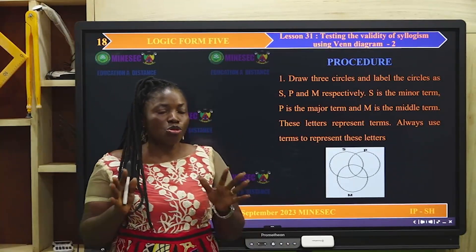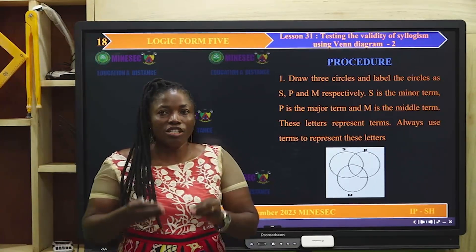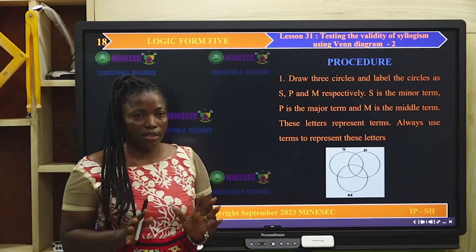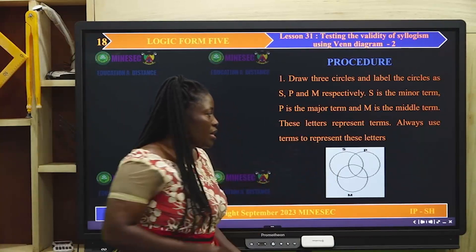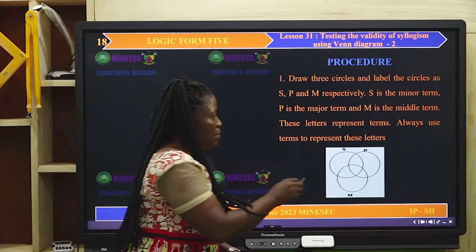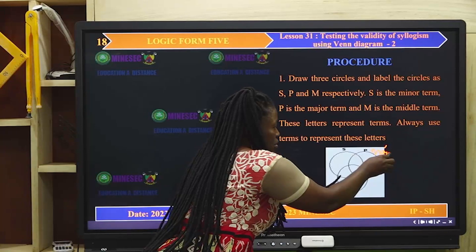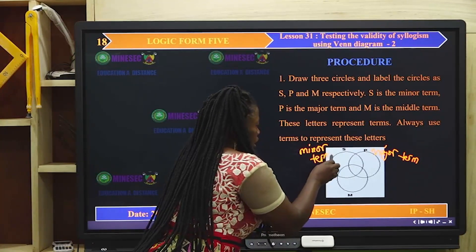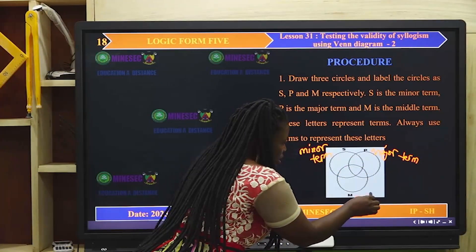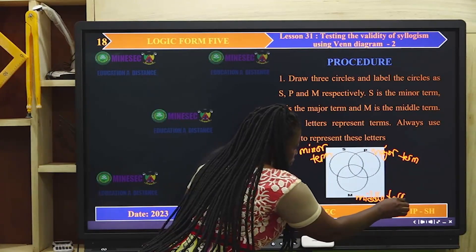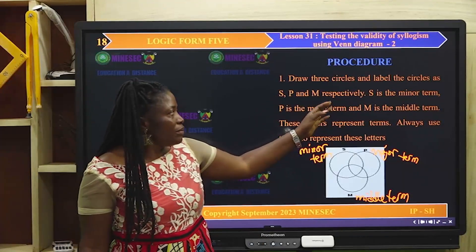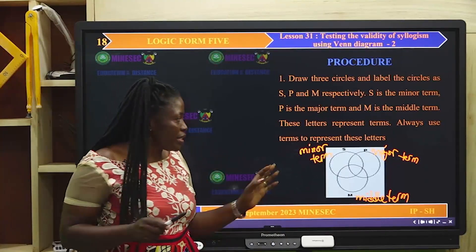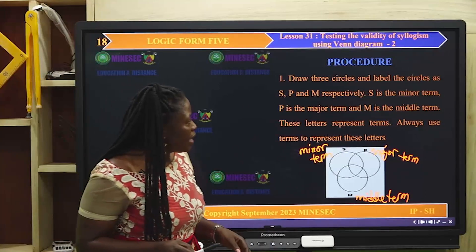The first thing to do is draw three overlapping circles. Rule number one: draw three overlapping circles. Here we have S, P, and M. P here is the major term, S is the minor term, and M is the middle term. Draw three circles and label them S, P, and M respectively. Always use the actual terms from the argument on these circles.